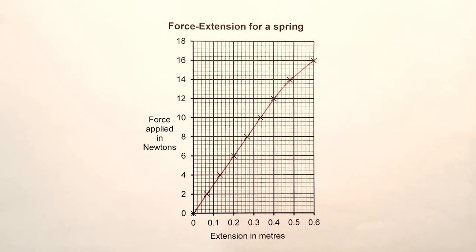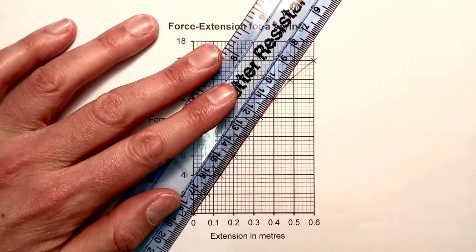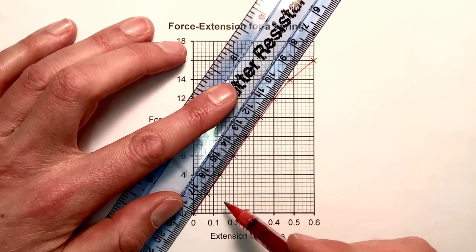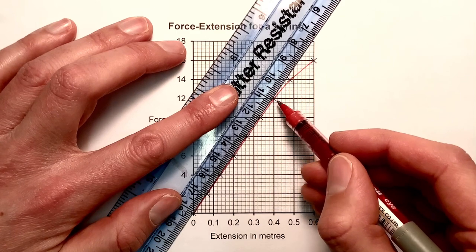where exactly does it stop being a straight line? That is identifying the limit of proportionality. To do that, you really need to get a ruler and lay your ruler alongside the straight line section of the graph. If we look at this with the ruler there, we can clearly see that it stops being a